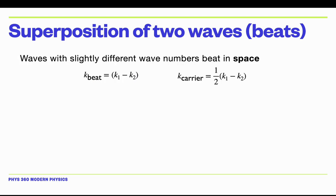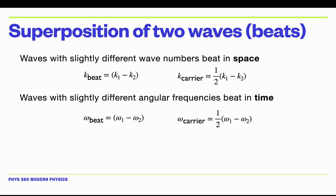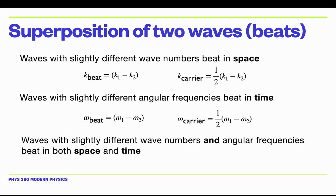If we now consider a traveling wave with both temporal and spatial variation, we can ask whether the waves beat in time or space. If the two waves have differing wave numbers that are close but slightly off, the waves will beat in space. If the waves have slightly different angular frequencies, they will beat in time. And if the waves have slightly different wave numbers and angular frequencies, the wave beats in both space and time.